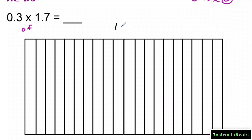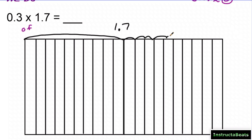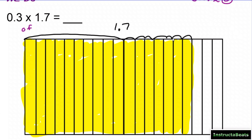I start by shading in my second factor, 1 and 7 tenths, written in decimal form. I shade in the complete first whole, and then 7 more tenths: 1, 2, 3, 4, 5, 6, 7. You lightly shade it in with a highlighter or pencil, just nice and light, making sure you shade in the right amount of tenths.